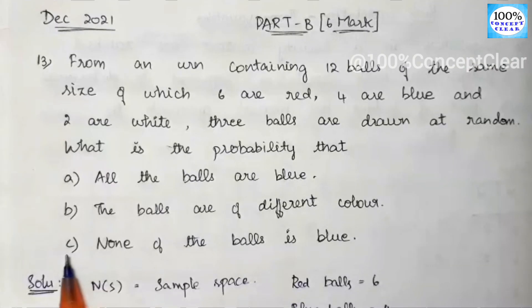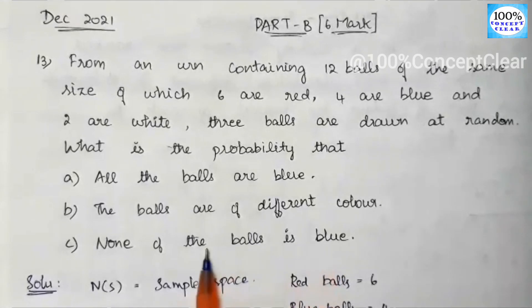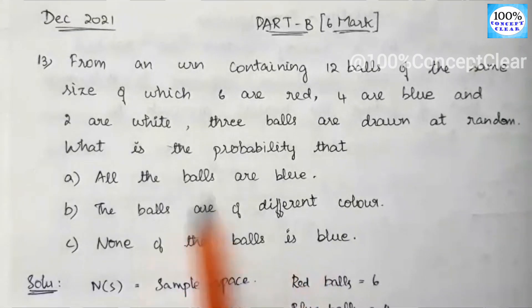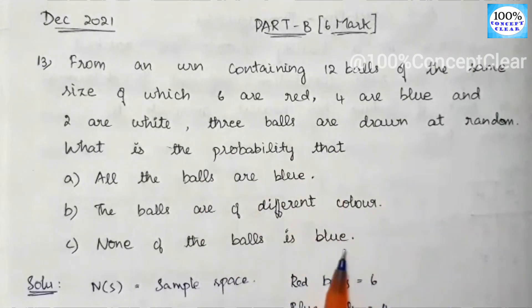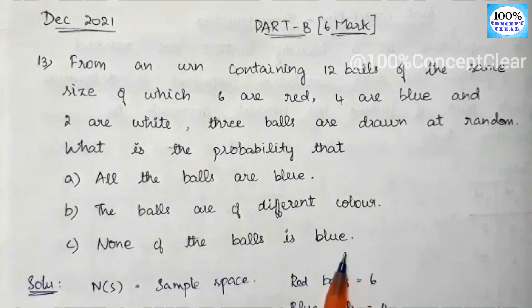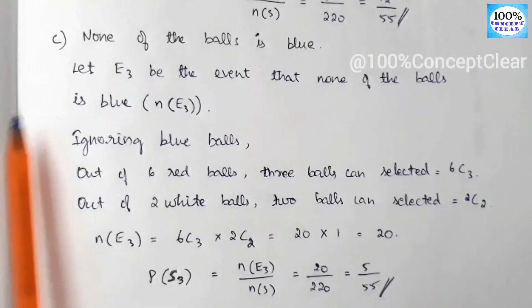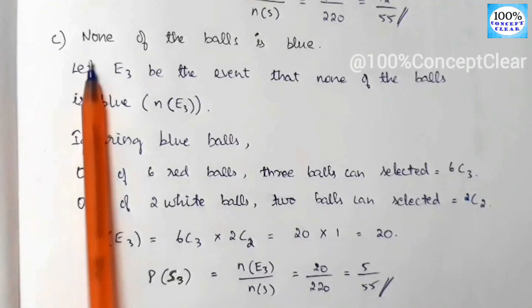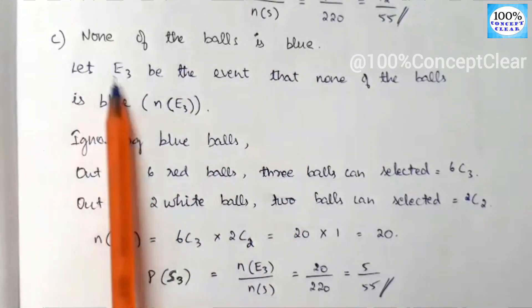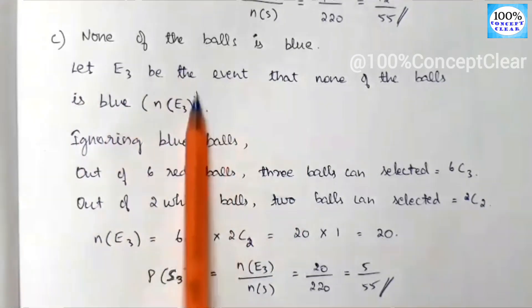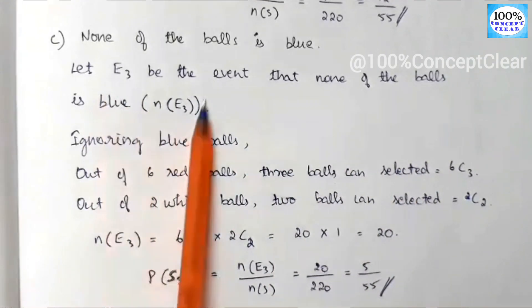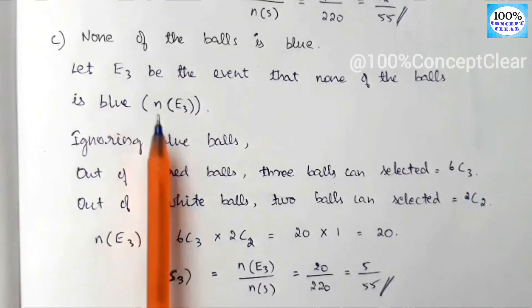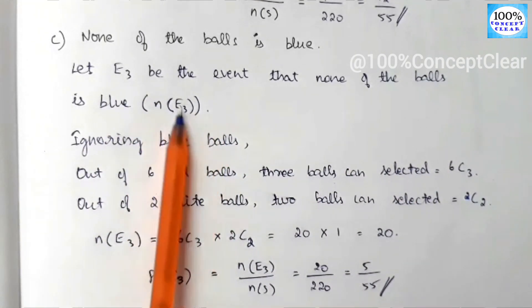Now Part C: none of the balls is blue. Let E3 be the event that none of the balls is blue. We ignore blue balls entirely and choose only from red and white balls.